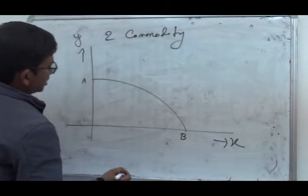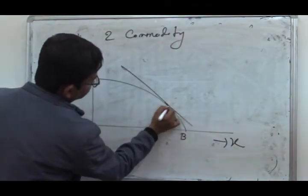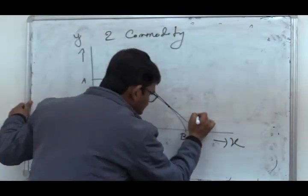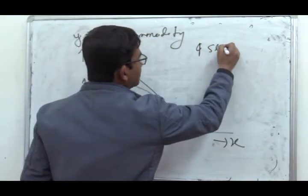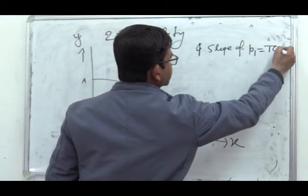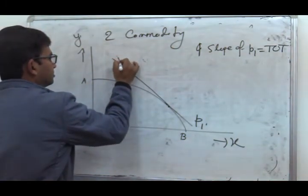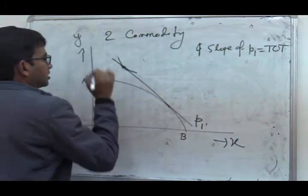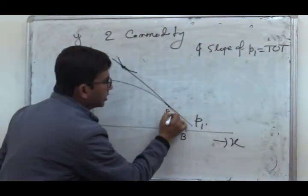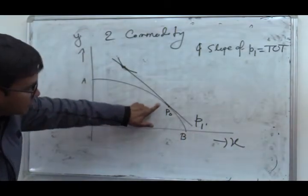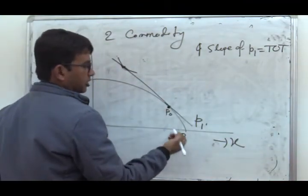First, let us consider the pre-tariff production and consumption equilibrium of the country. P1 is our international terms of trade, so the slope of P1 equals the international terms of trade. Before imposition of tariff, P0 is the point of equilibrium — it was the free trade production point of the country.